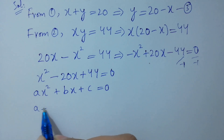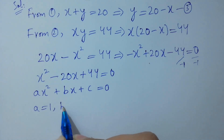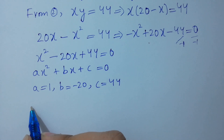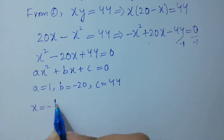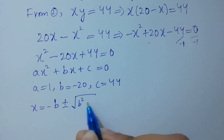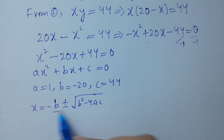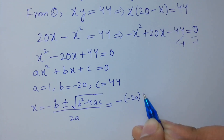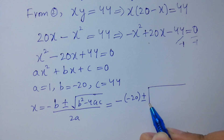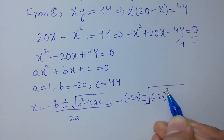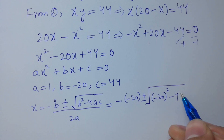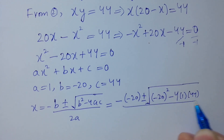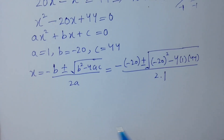Comparing, we have a equal to 1, b equal to minus 20, and c equal to 44. Applying the quadratic formula: x equals minus b plus or minus square root of b squared minus 4ac, all over 2a. Putting in the values: b is minus 20, a is 1, and c is 44, over 2 times 1.